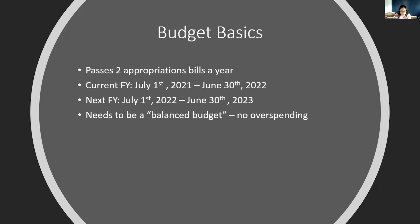The budget is one of the most important jobs the governor has, and the governor has a lot of power on what gets funded and what Georgia's priorities are. Every year we actually pass two appropriations bills: one is called the amended budget, which looks at the current fiscal year and adjusts where needed, and the other is the next fiscal year budget, which starts on July 1st — that's the budget the governor proposes.